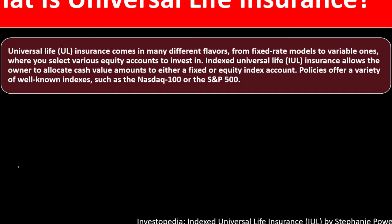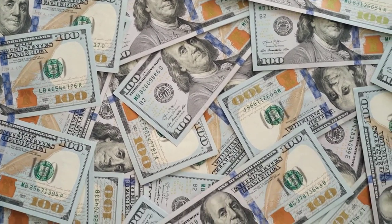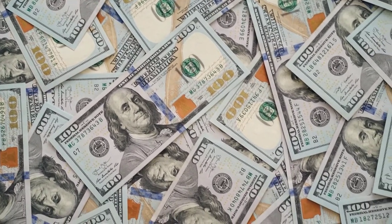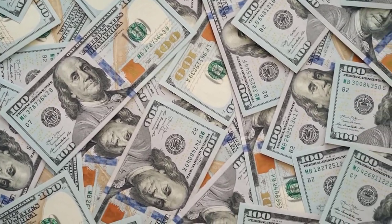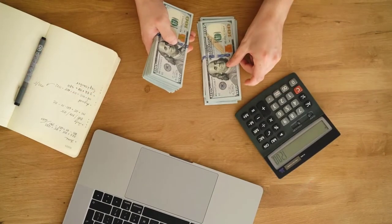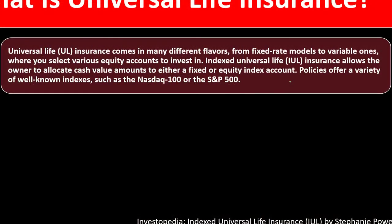What is universal life insurance? Universal life insurance comes in many different flavors from fixed rate models to variable ones where you select various equity accounts to invest in. Indexed universal life IUL insurance allows the owner to allocate cash value amounts to either a fixed or equity index account. The index funds are like average types of funds when they're trying to get an idea of certain account categories within the full stock market such as the S&P 500.